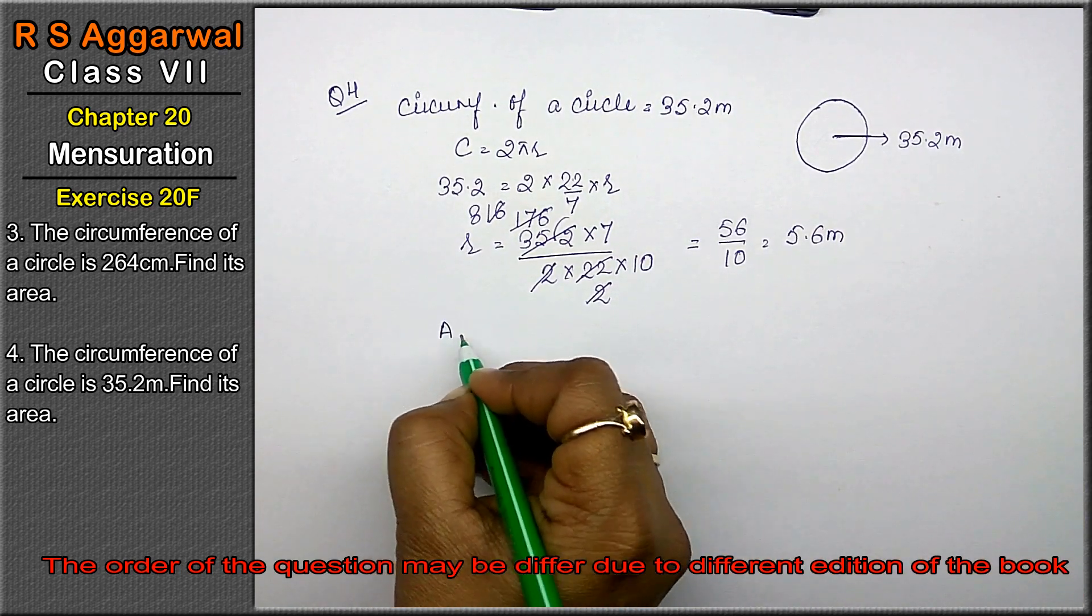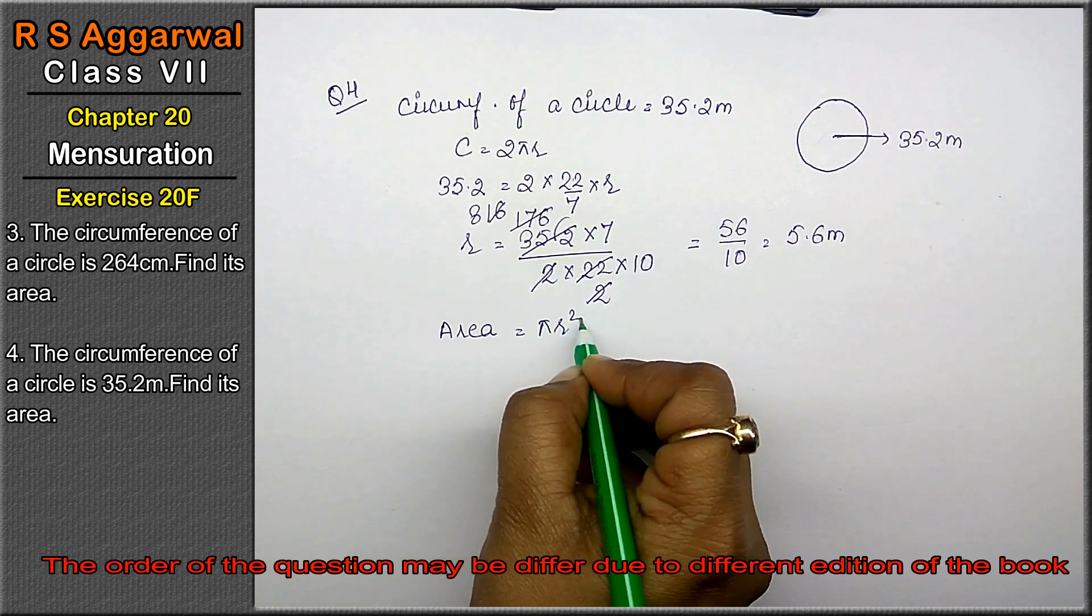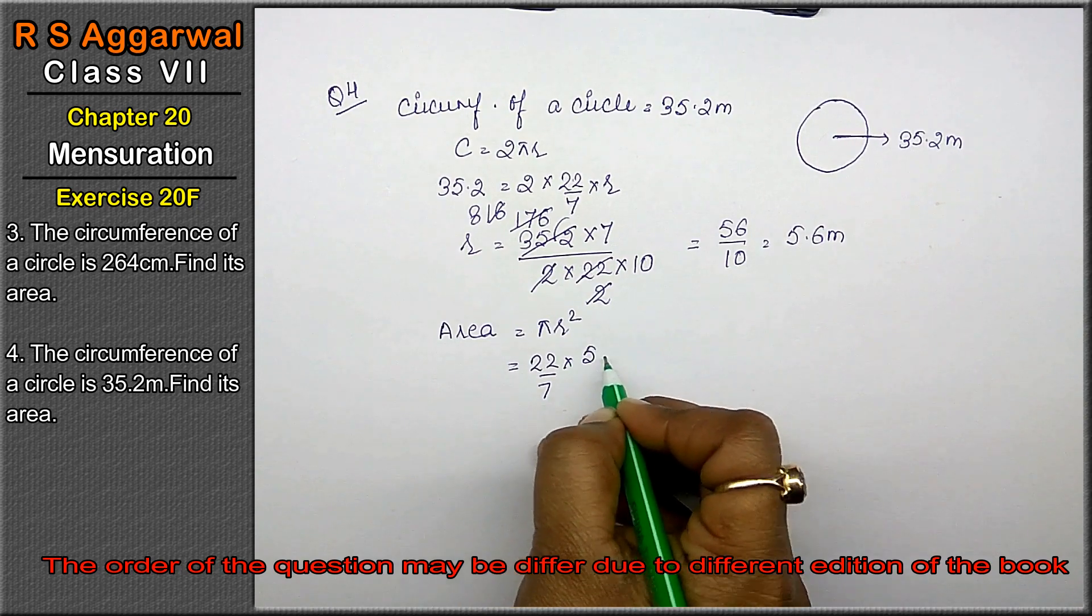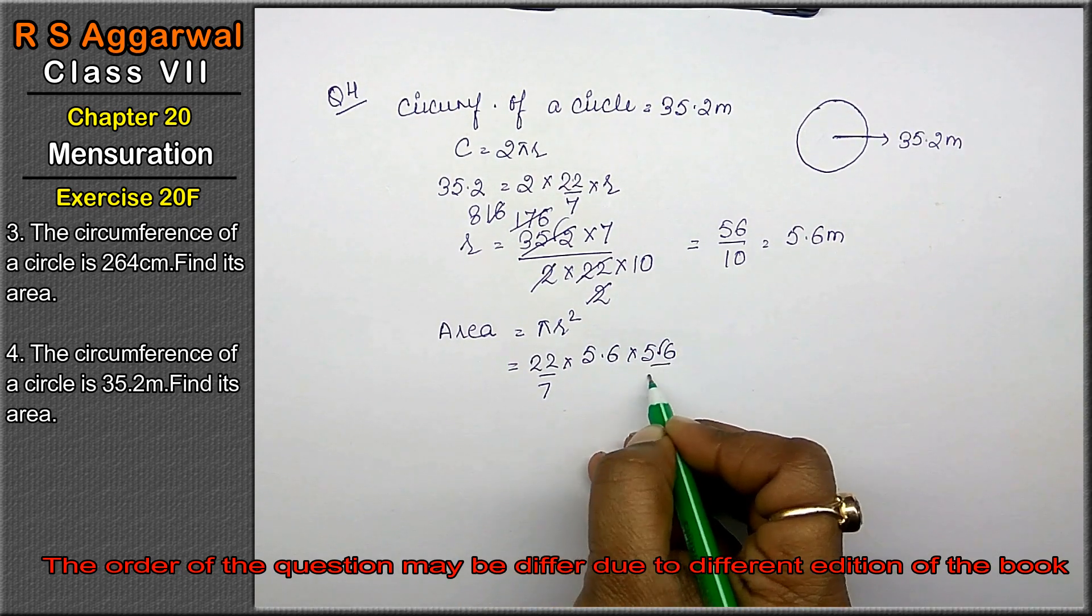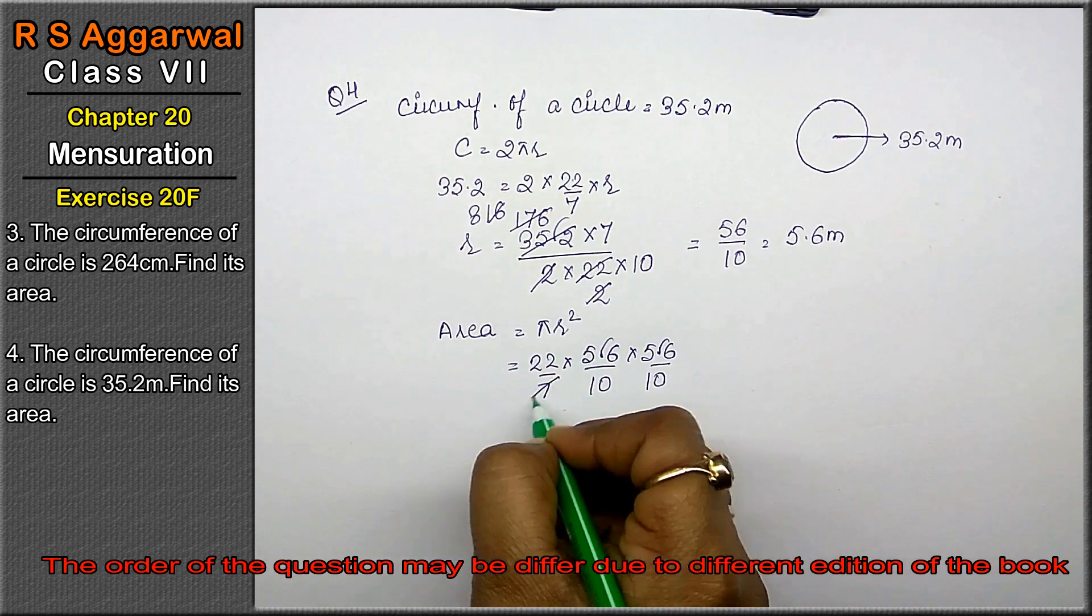Now we have to calculate the area. Formula of area is pi r square. 22 upon 7. R ki value hai 5.6 into 5.6. Point hata ya. 10 lagaya. Again point hata ya. Niche 10 lagaya. 7 ones are 7.